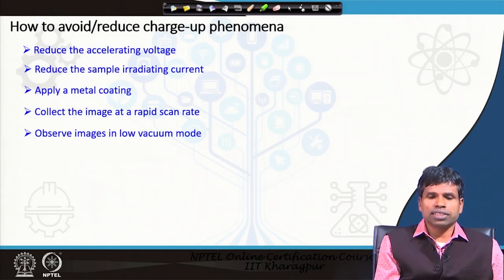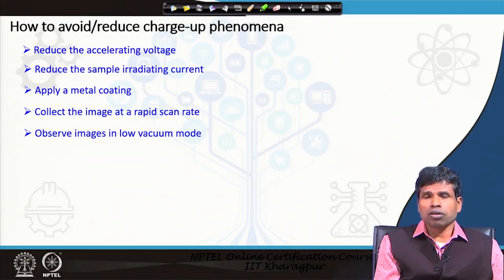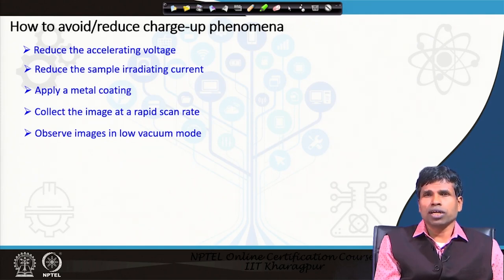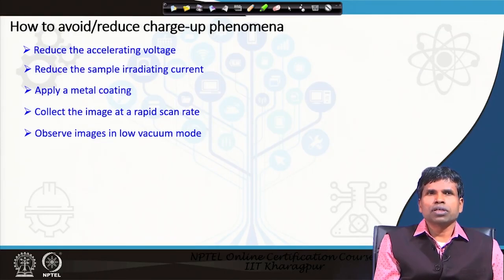How to avoid and reduce the charge-up phenomenon? There are different ways. One is to reduce the acceleration voltage — with higher acceleration voltage, more electrons strike the surface and more charge accumulates. Reducing the sample irradiation current is also related: higher acceleration voltage means more irradiation current and more charge build-up. Applying a metal coating means accumulated electrons will not stay at the surface — they will transfer to ground.